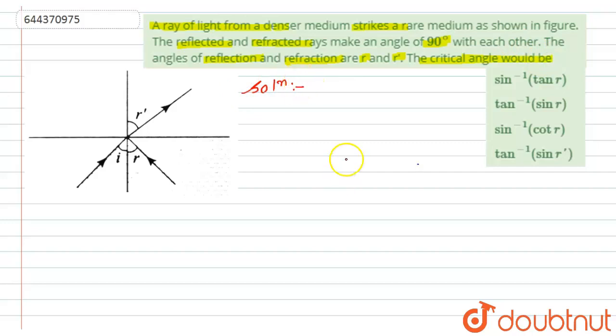Actually in this question we have given here a diagram in that we can see a ray is striking from a denser medium to rare medium with an angle of incident i, angle of reflection as r, and angle of refraction as r dash.